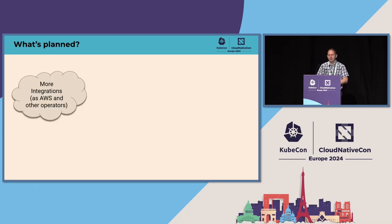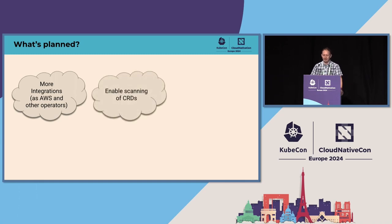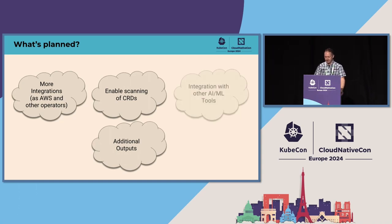So what's planned? We refactored the whole integration part of K8sGPT. We will add more integrations such as for AWS, other cloud providers, and other operators. We will enable the scanning of CRDs and have additional output options — at the moment you can send Slack messages, and in the future it will be Teams and so on. We will also try to integrate with other AI and ML tools.